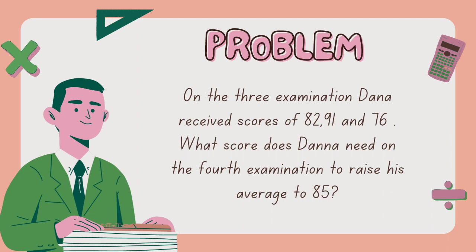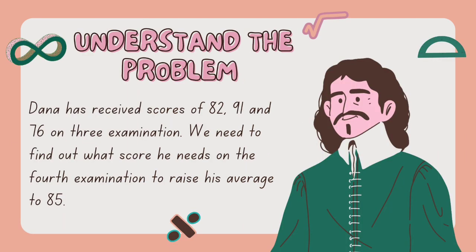The first step is to understand the problem. Dana has taken three examinations and received scores of 82, 91, and 76. We need to determine the score Dana needs on the fourth examination to raise his average to 85.